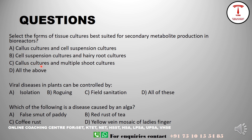Viral diseases can be controlled by isolation, rogging, and field sanitation. So the answer to the control methods question is all of these. Another question: 'Which of the following is a disease caused by algae?' — False smut of paddy is a fungal disease. Red rust of tea is caused by the alga Cephaleuros. Coffee rust is a fungal disease. Yellow vein mosaic of lady's finger is a viral disease. So the correct answer is option B — red rust of tea.